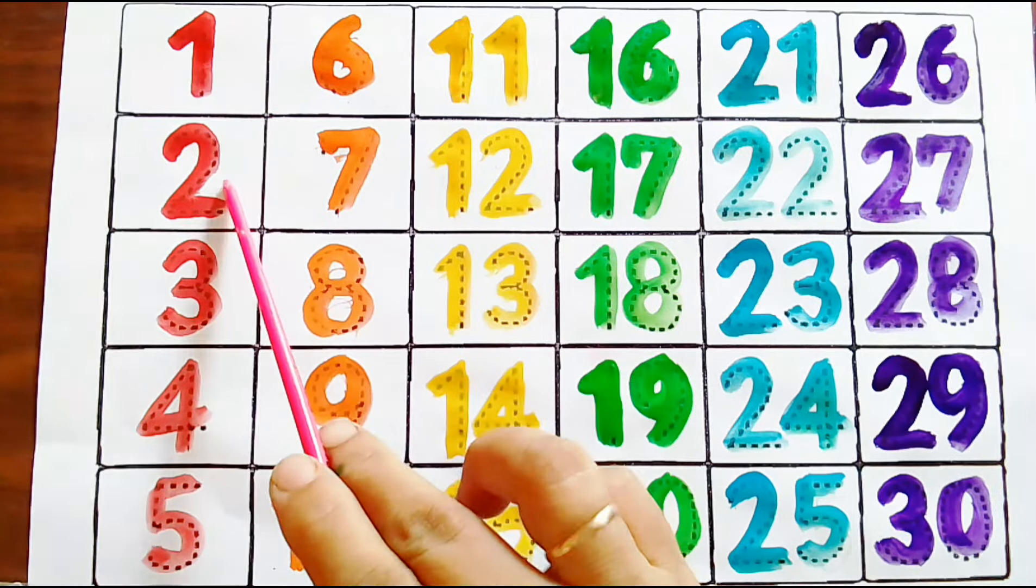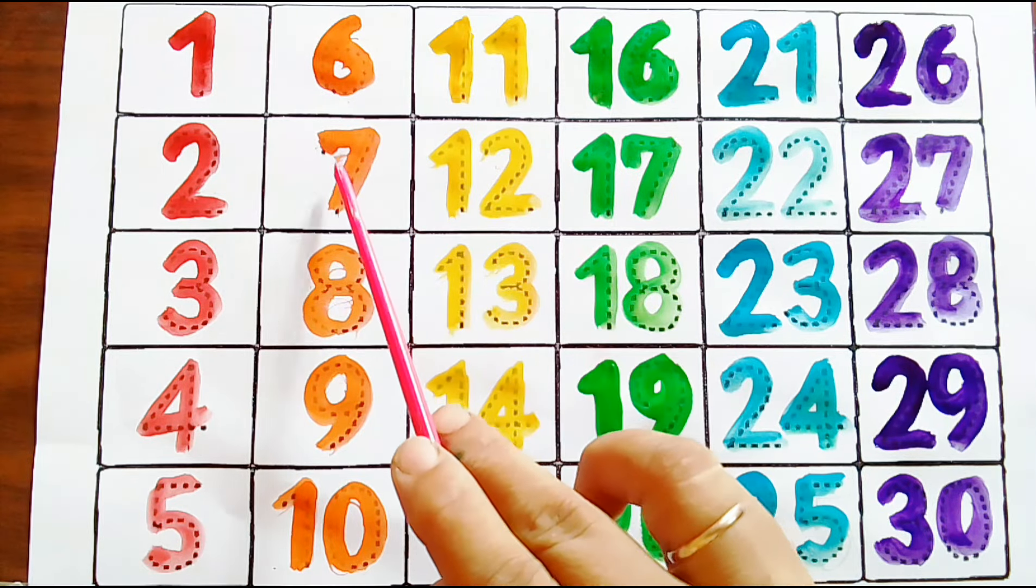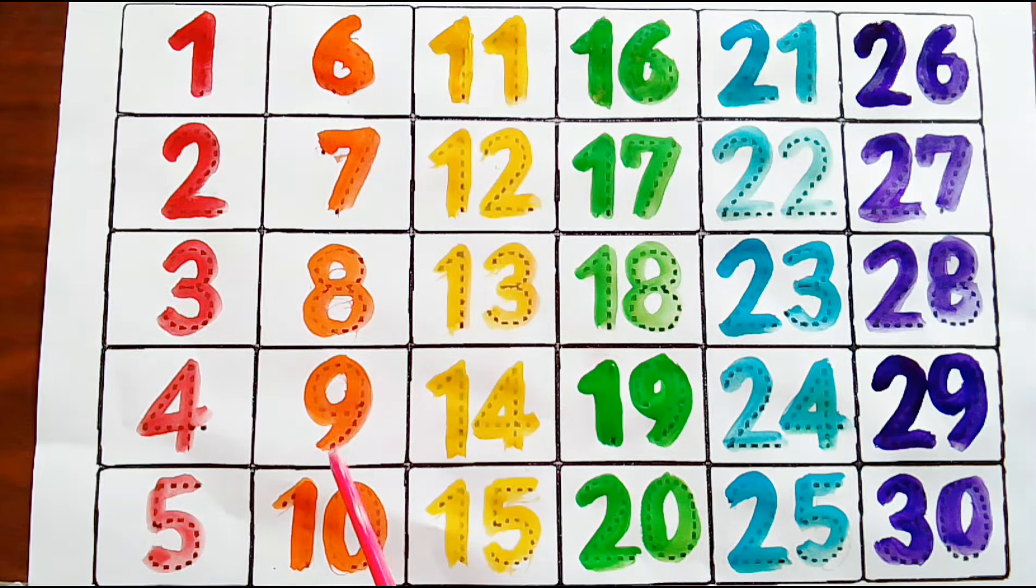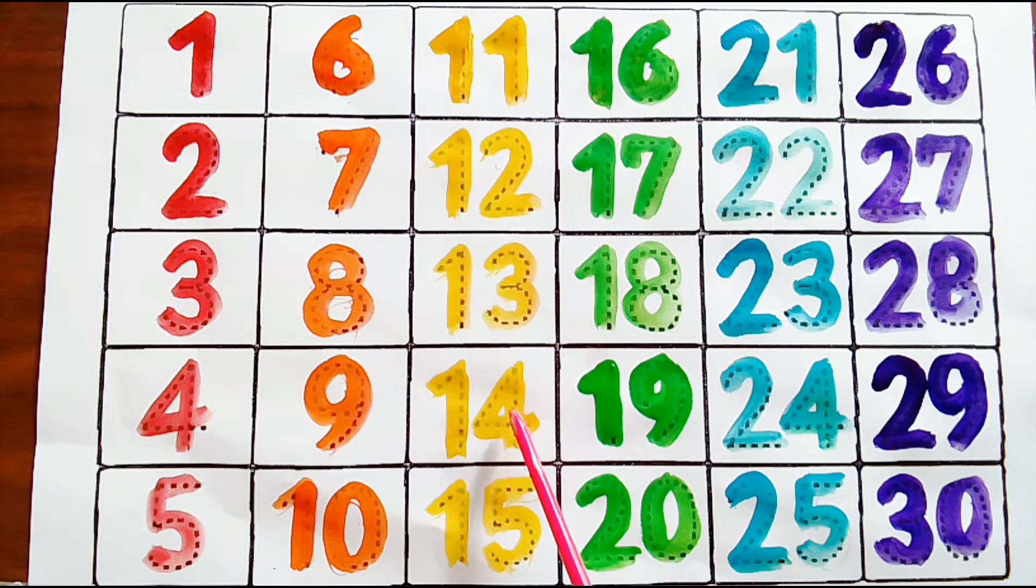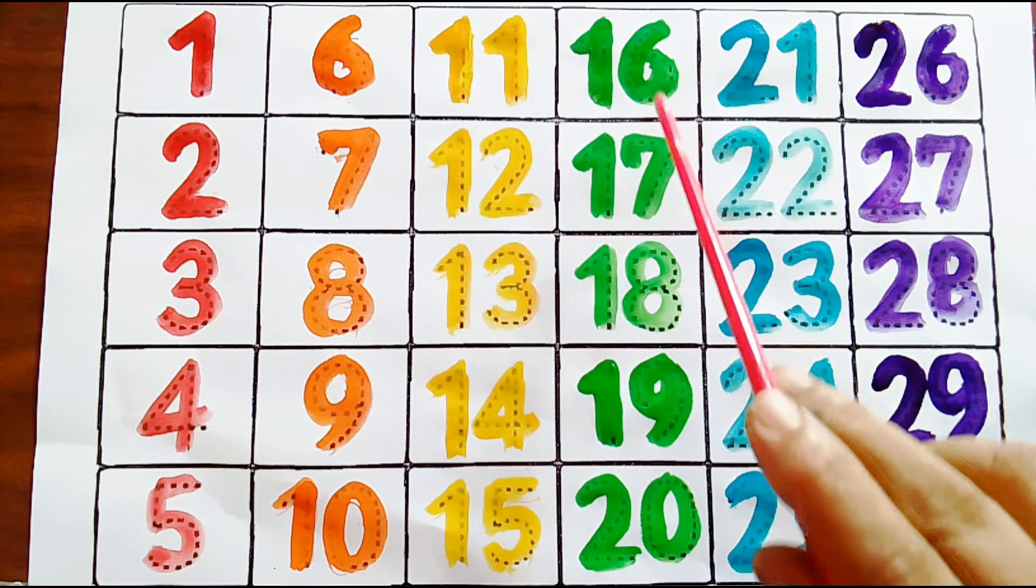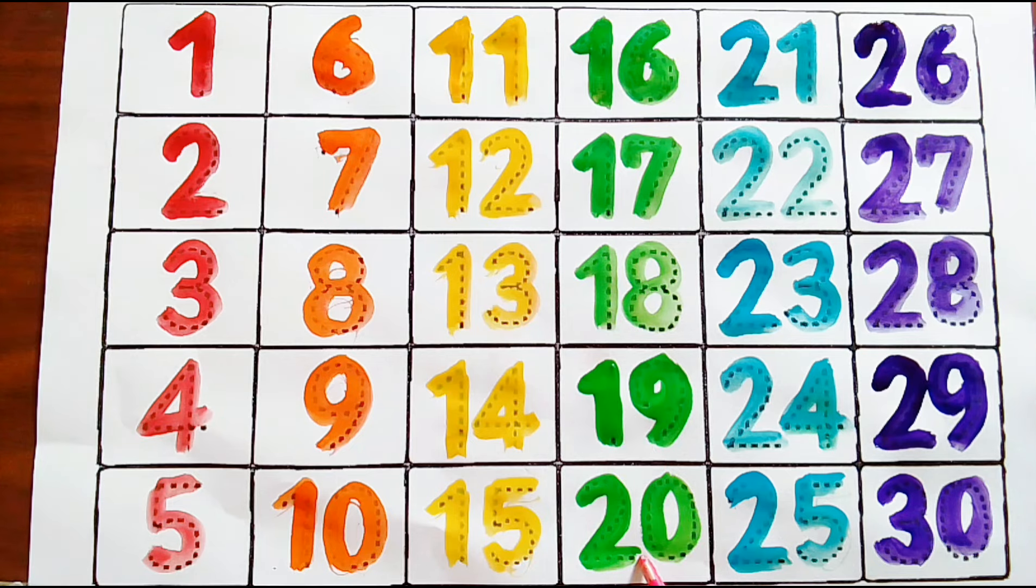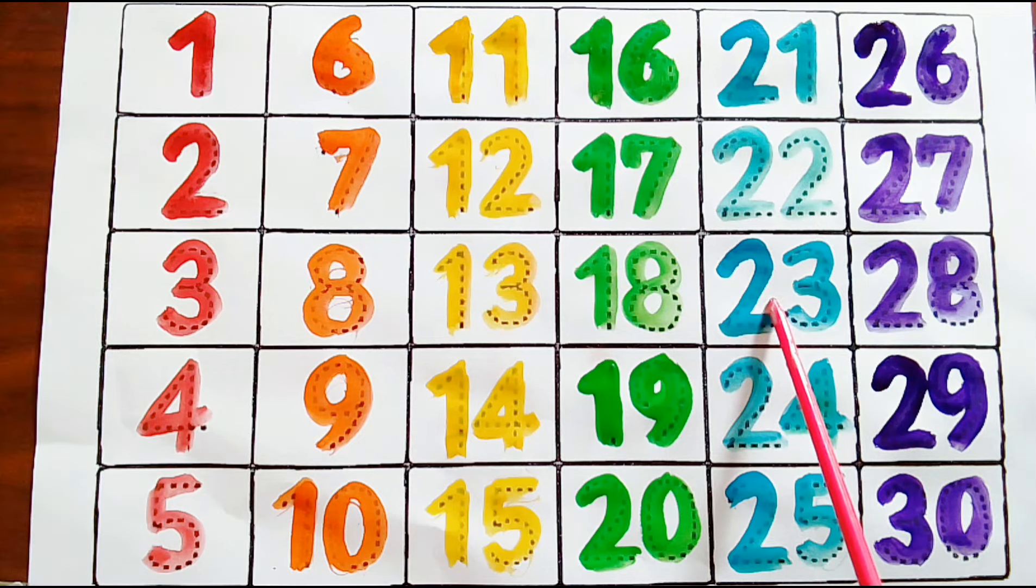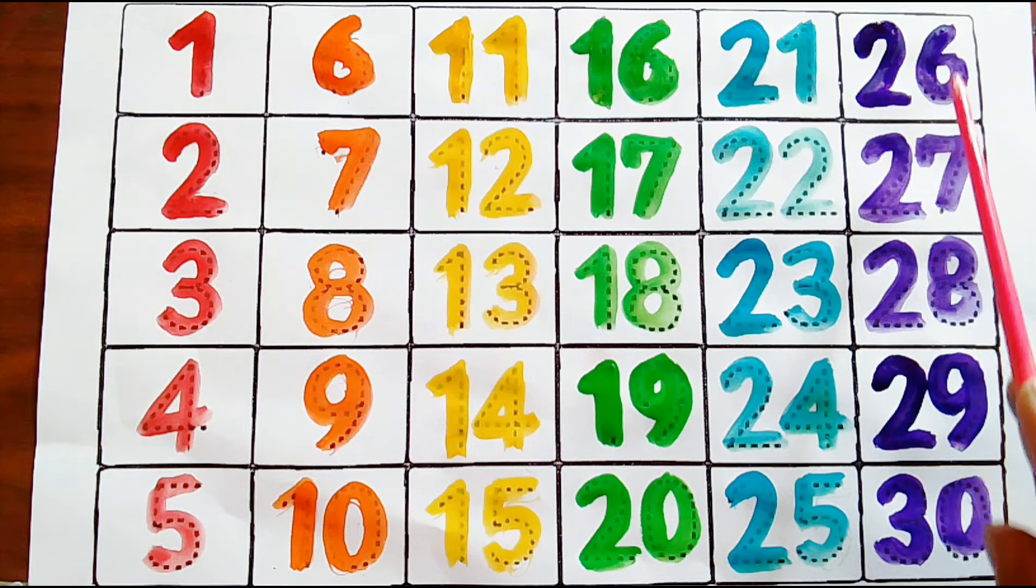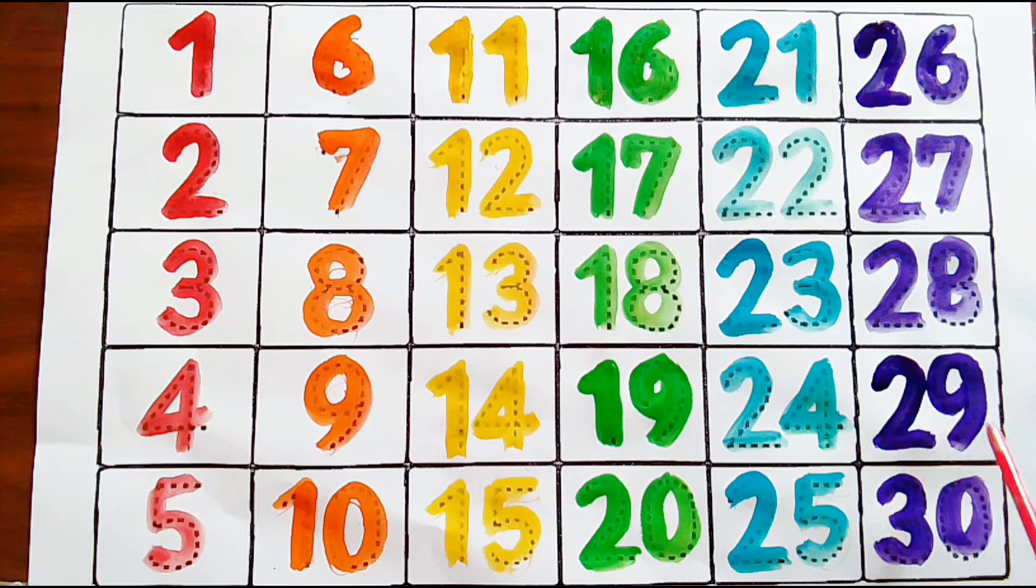Numbers: one, two, three, four, five, six, seven, eight, nine, one zero, ten. Eleven, twelve, thirteen, fourteen, one five, fifteen. Sixteen, seventeen, eighteen, nineteen, two zero, twenty. Twenty-one, twenty-two, twenty-three, twenty-four, twenty-five, twenty-six, twenty-seven, twenty-eight, twenty-nine, three zero, thirty.